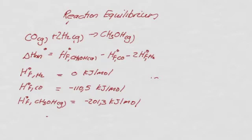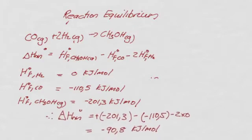We can then substitute that in. Substituting, we get the enthalpy of formation of methanol, minus 201, minus the enthalpy of formation of CO, so that's minus 110, minus 2 times zero, and so we get that the enthalpy of reaction at 25°C is approximately minus 91 kilojoules per mole.